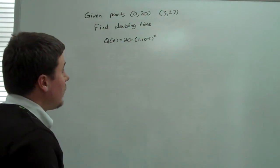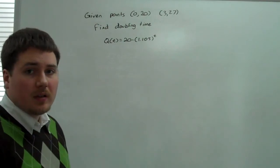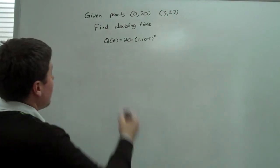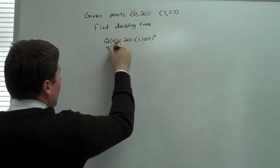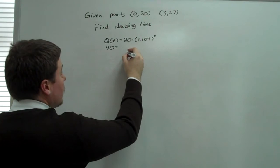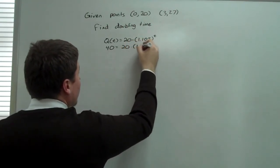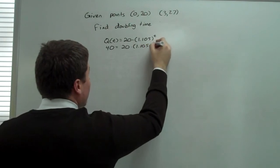So the question is, at what time do we have twice our initial amount? Our initial amount is 20, so that would mean that 40 is our doubled quantity. So 40 is equal to 20 times 1.105 to the t.